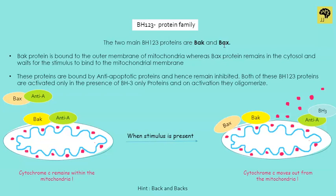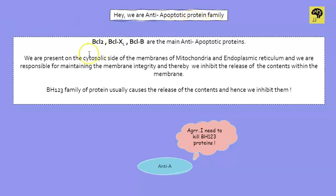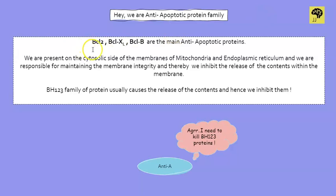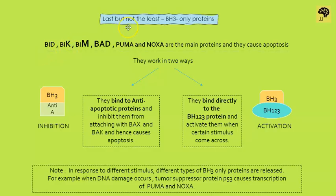We've completed the pro-apoptotic BH123 protein family. Now the anti-apoptotic protein family includes Bcl-2, Bcl-xL, and Bcl-b. Their duty is maintaining the membrane integrity of both the mitochondria and the endoplasmic reticulum. That's why they inhibit Bax and Bak — they don't want the membrane they're attached to become permeable. They are essentially the security guards who guard the membrane perfectly.